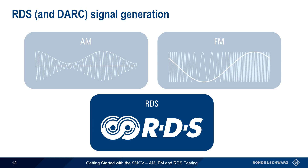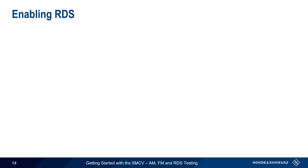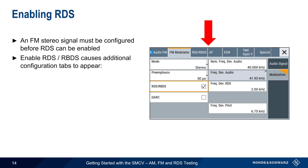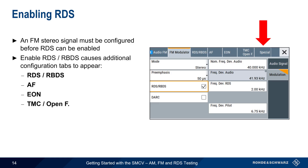Now let's go through how to configure an RDS subcarrier within an analog FM signal. After that, we'll also briefly discuss DARC and DARC configuration. In order to generate an RDS signal, an FM stereo signal must first be configured. After enabling RDS, additional configuration tabs will appear. These tabs are for general RDS parameters, alternative frequencies, enhanced other networks, the traffic management channel and other similarly formatted information, and special parameters.